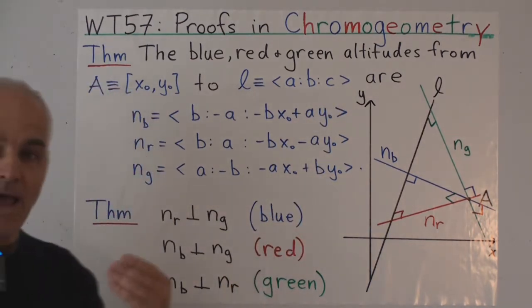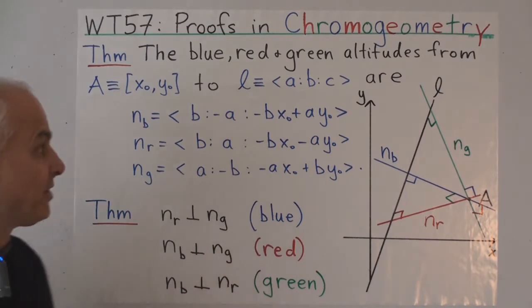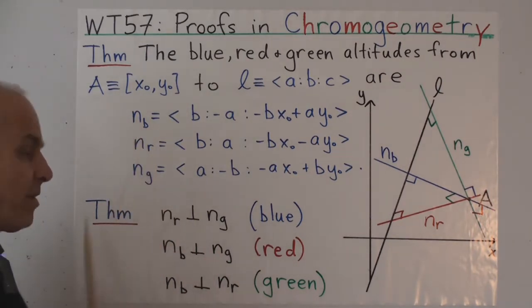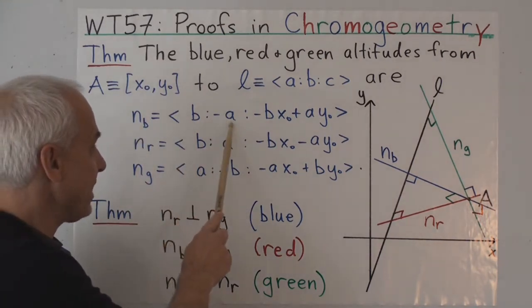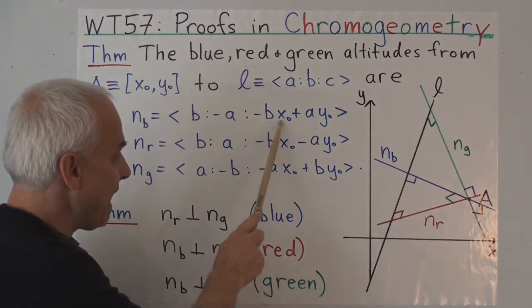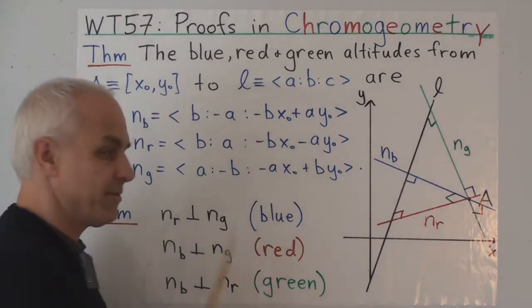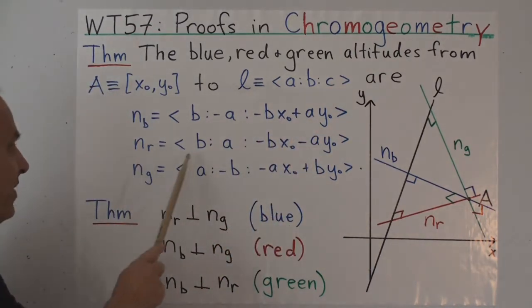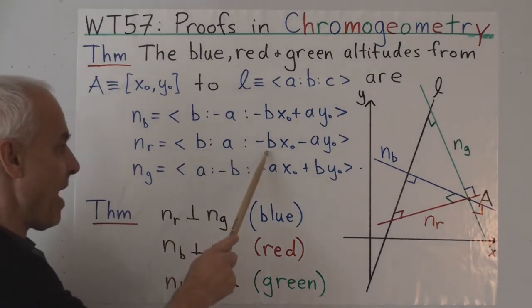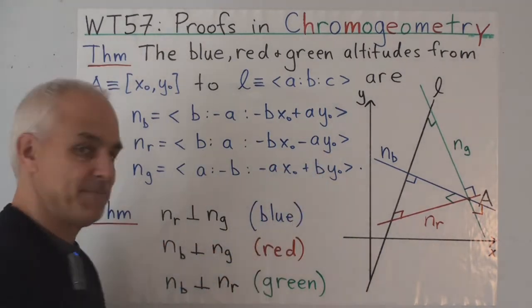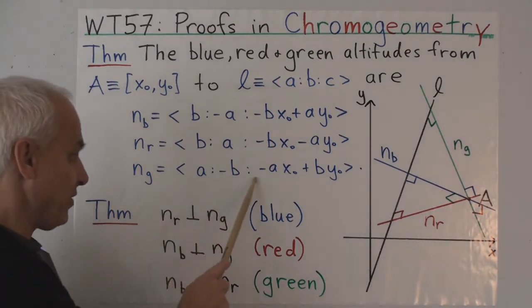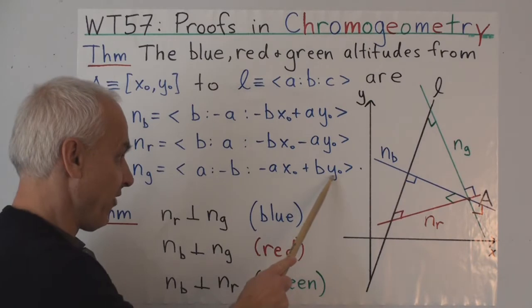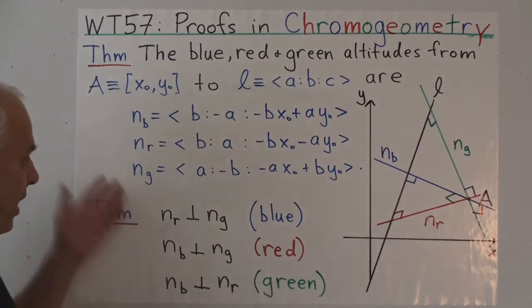Then the three altitudes, the blue, red, and green altitudes from A to L are given by these three formulas. The blue altitude is B to minus A to minus B x naught plus A y naught. The red one, B to A to minus B x naught minus A y naught. And the green one, A to minus B to minus A x naught plus B y naught.